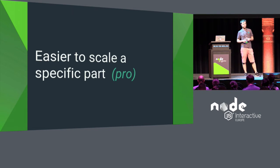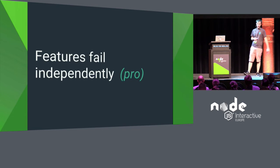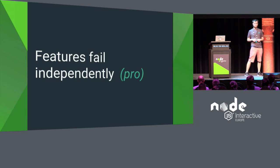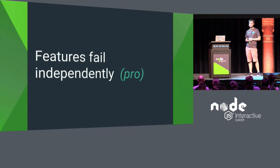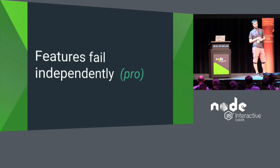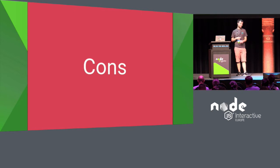It's also easier to scale specific parts — with separate services and databases you can scale only the part that has higher traffic. Features can also fail independently. It's not easy to achieve, but we could achieve it for some features, meaning the whole system might be only partially functioning while some features still serve the user's needs. I'll talk more about that later.